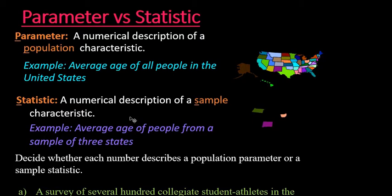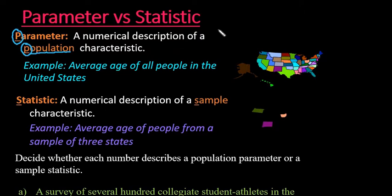So let's look at the definition. A parameter is a numerical description of a population characteristic. Anytime you are talking about the entire population, you are going to be using a parameter. Notice that both start with a P — so anytime you are talking about the population, you are going to use a parameter.